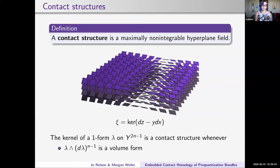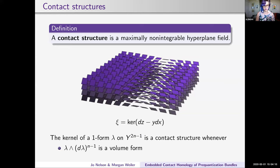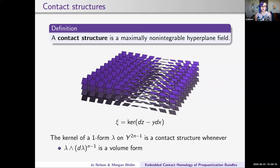As a simple example, if we go back to the kernel of dz minus y dx, if we want lambda of R to be one, we're going to need to use d/dz. And d/dz is also going to be what makes d lambda vanish when we contract it. Then the flow of the Reeb vector field is just going upwards in the z direction with time.